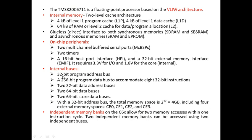The internal buses include a 32-bit program address bus, a 256-bit program data bus to accommodate eight 32-bit instructions, two 32-bit data address buses, two 64-bit data buses, and two 64-bit store data buses exclusively for storing. With the 32-bit address bus, the total memory space is 2^32 = 4GB, including four external memory spaces: CE0, CE1, CE2, and CE3.